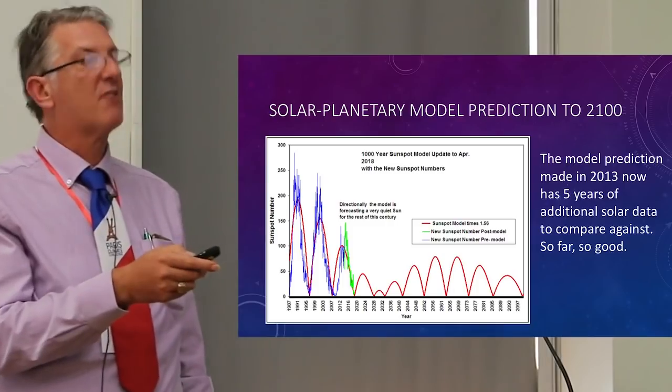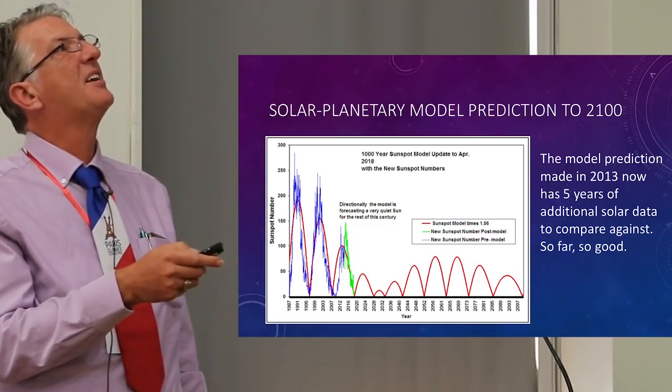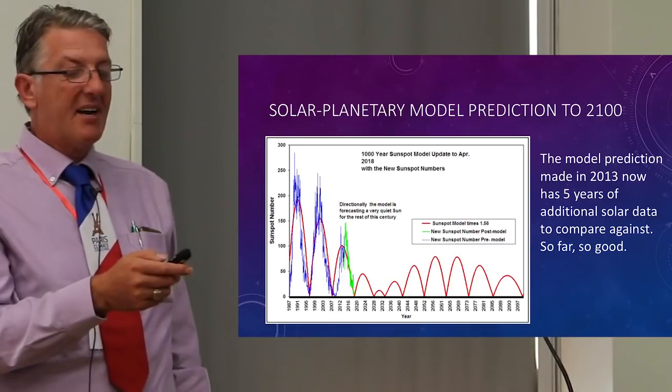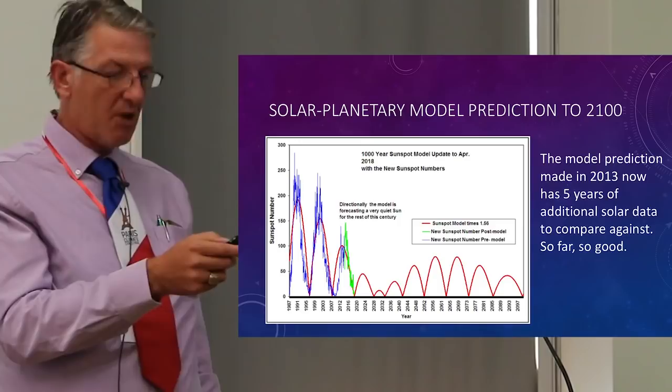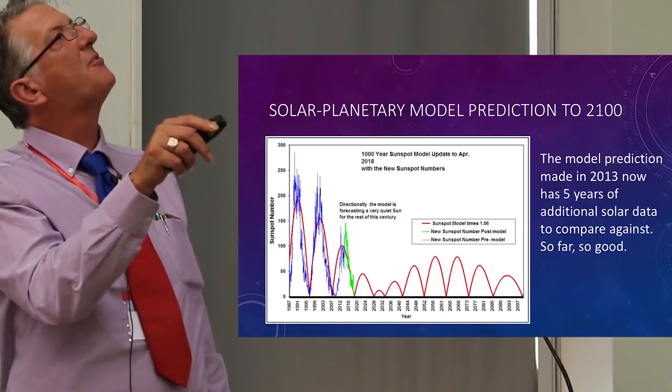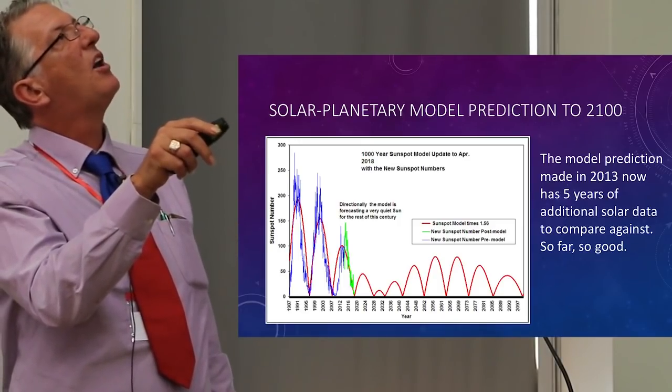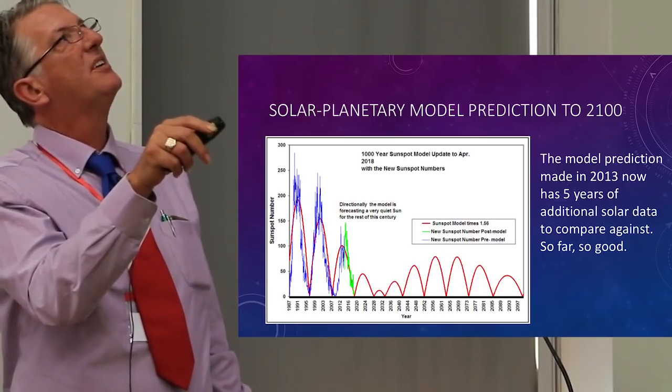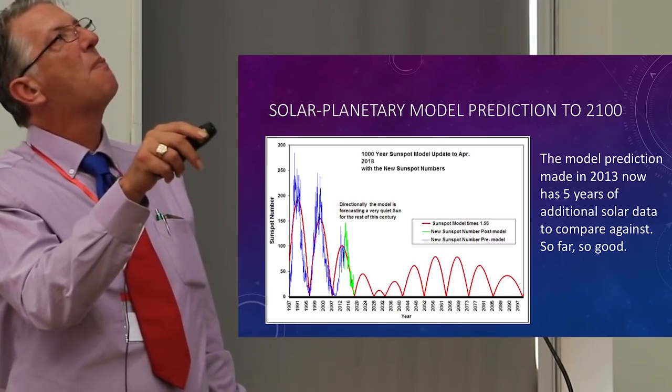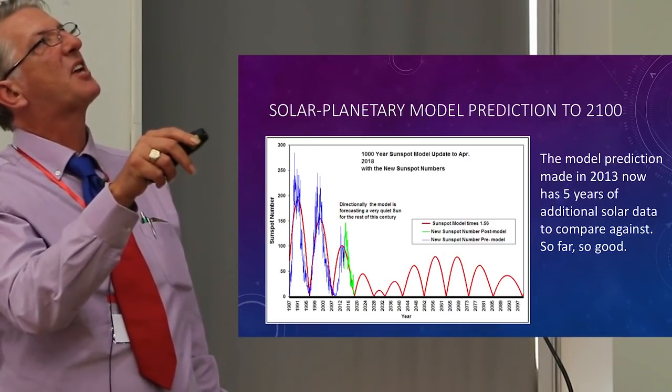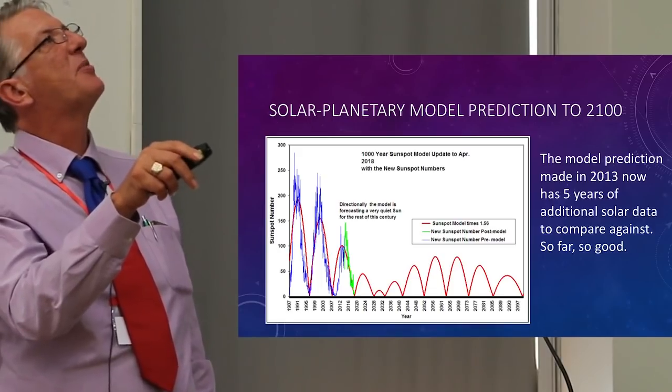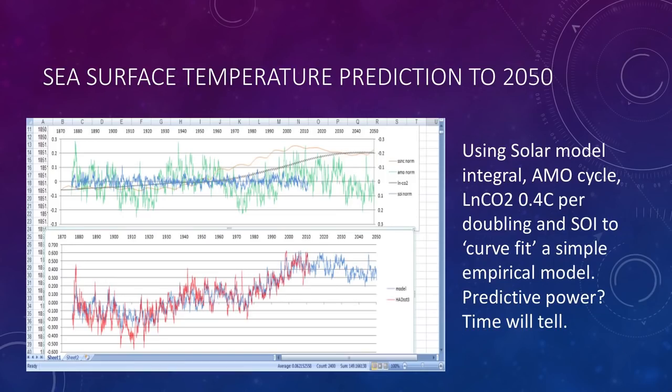So there are several models now saying that this is what we're likely going to see. I made another wiggle matching model, a very simple empirical model using a solar integration of the yellow curve along with our prediction for the next 40 years. There's the Atlantic Multidecadal Oscillation there in green and then I just kind of copied an earlier chunk of it onto the end just for a bit of realism. We've got the Southern Oscillation Index in there as well.